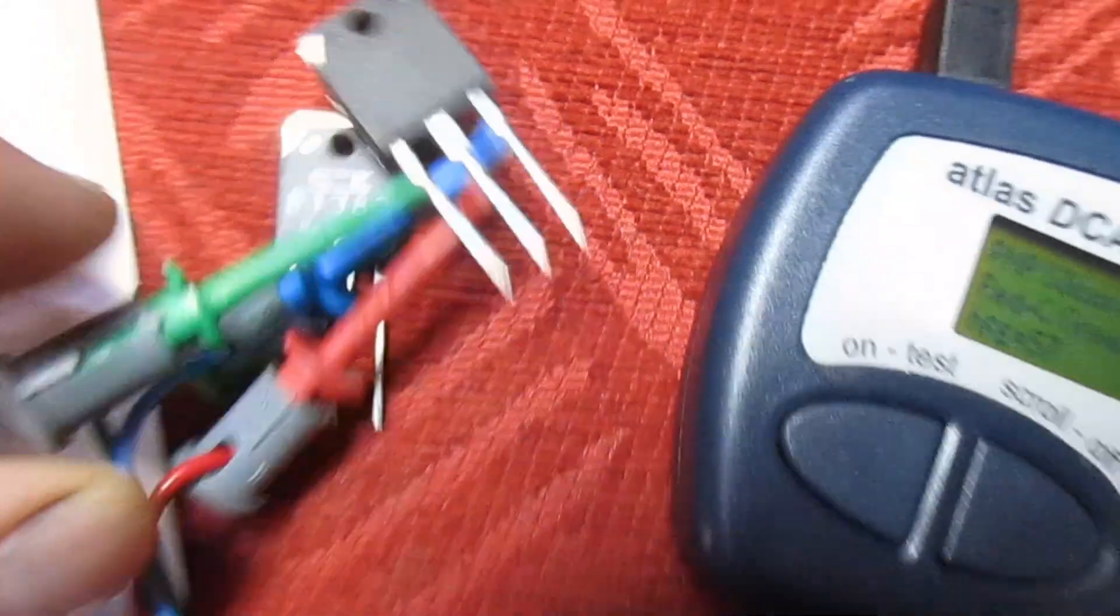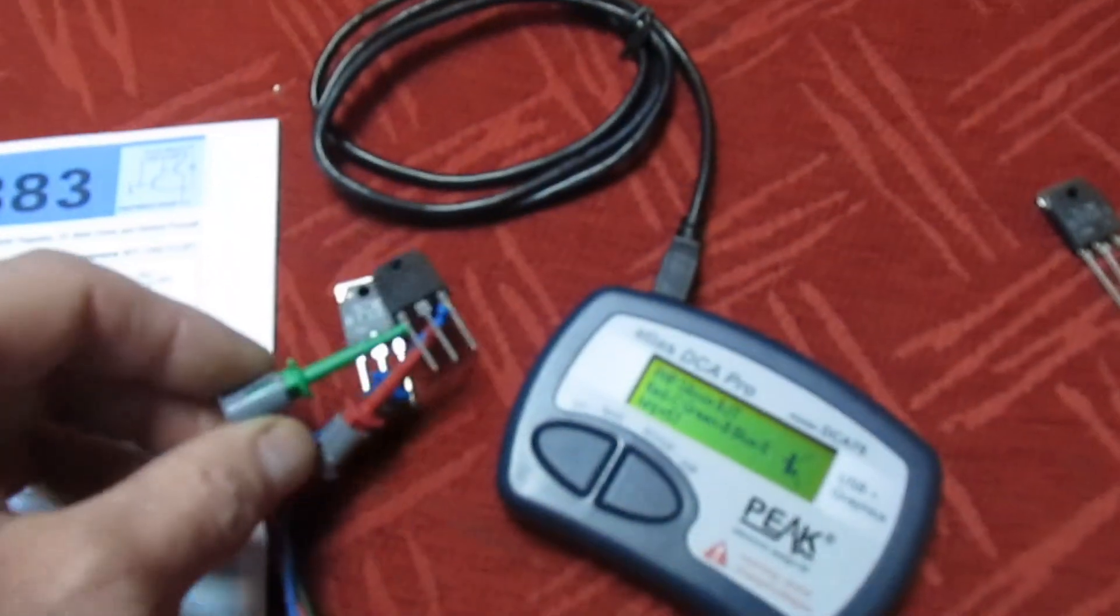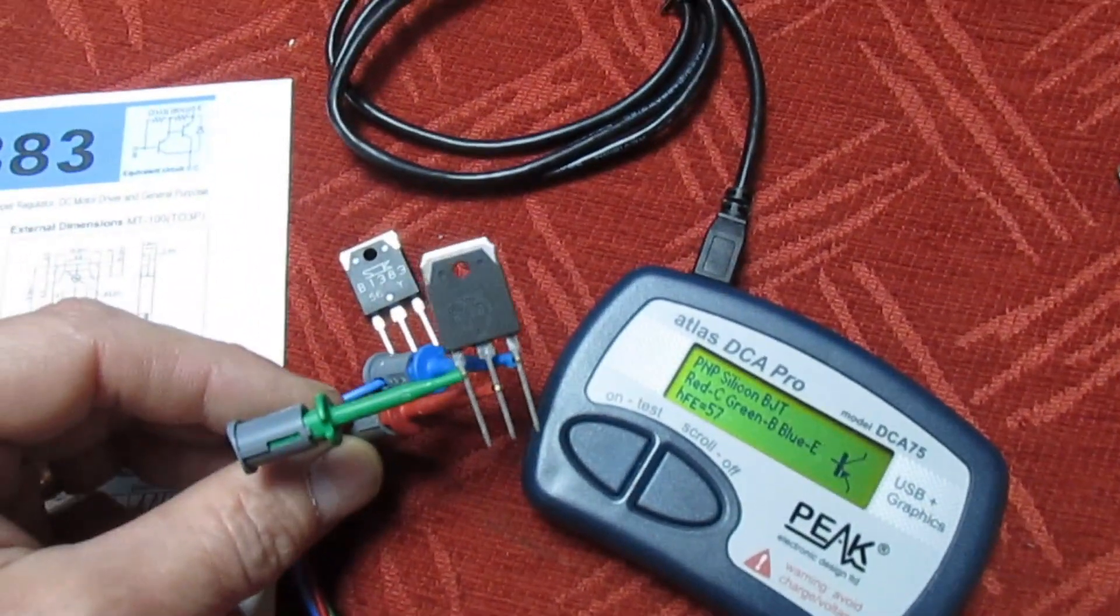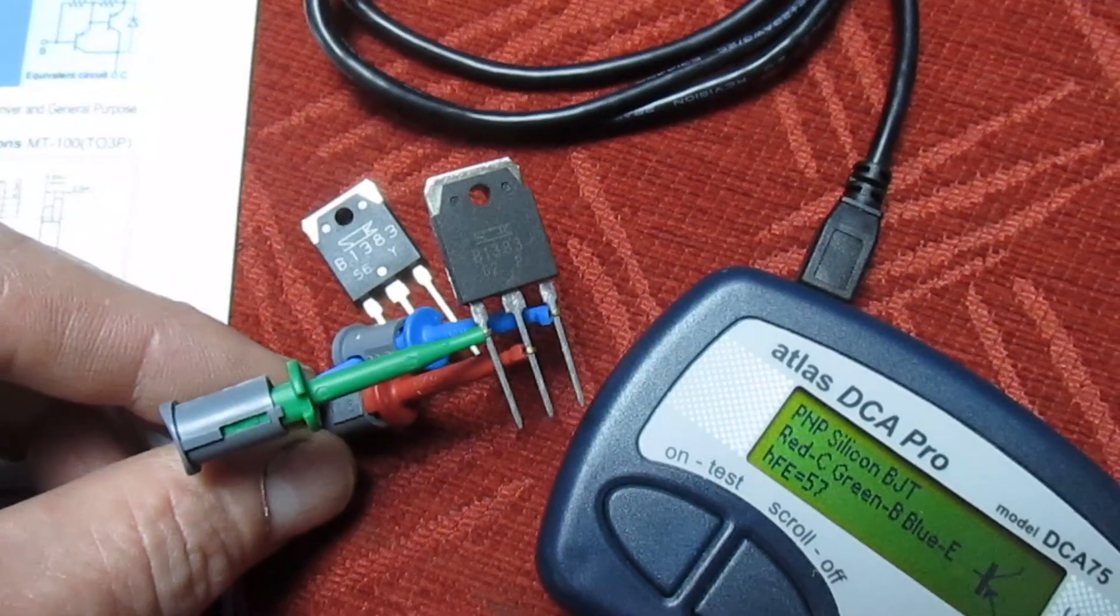So these are totally totally fake. They're not Darlingtons at all. It would be very dangerous to fit that in anything. What I actually want them for is this Denon amplifier. I just thought I'd get a couple of these because I saw them on the internet for a couple of pounds. I thought they must be fake, but for a couple of quid let's buy a pair and see what you actually get for your money.